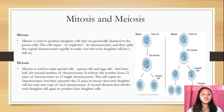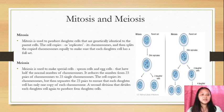Mitosis is used to produce daughter cells that are genetically identical to the parent cells. The cell copies or replicates its chromosomes and then splits the copied chromosomes equally to make sure that each daughter cell has a full set.